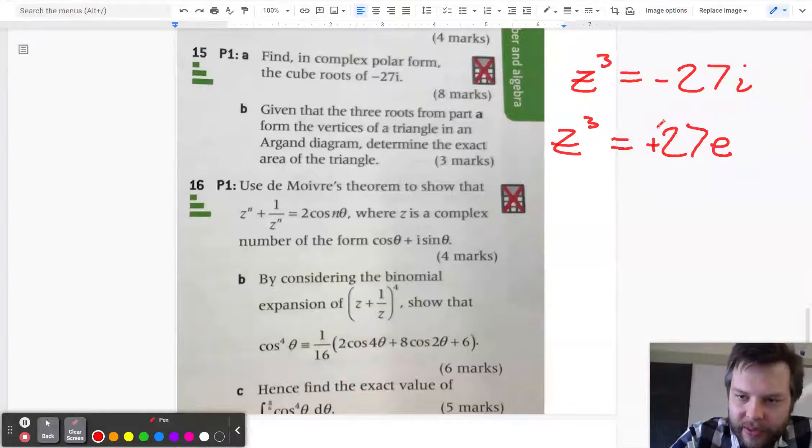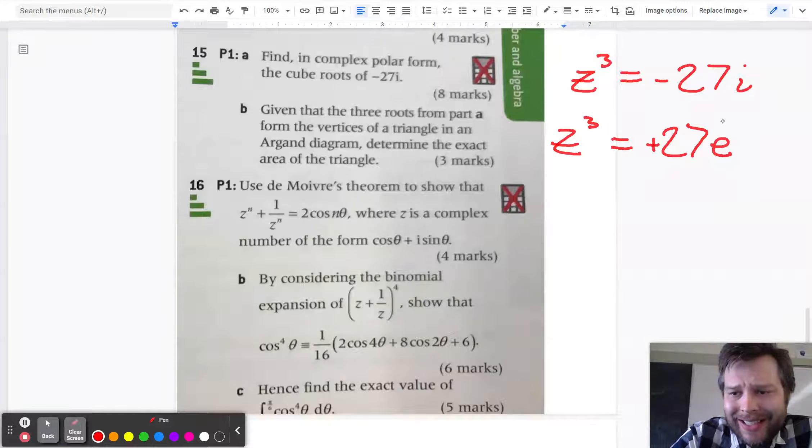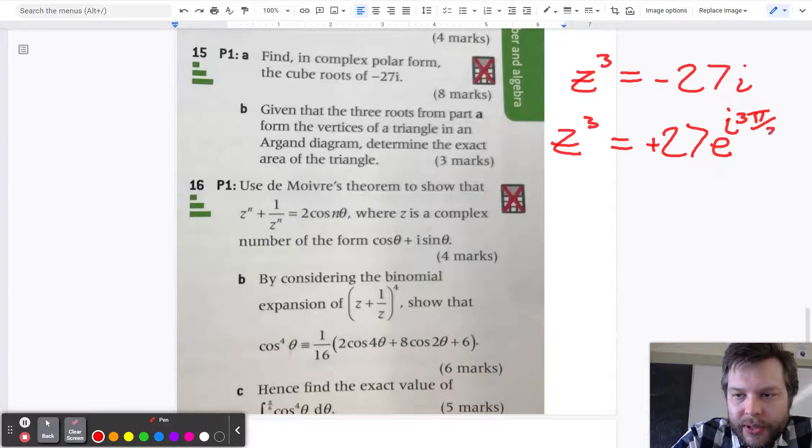I'm sorry, the r is not negative 27. r is positive 27, times e to the i times 3 pi over 2.